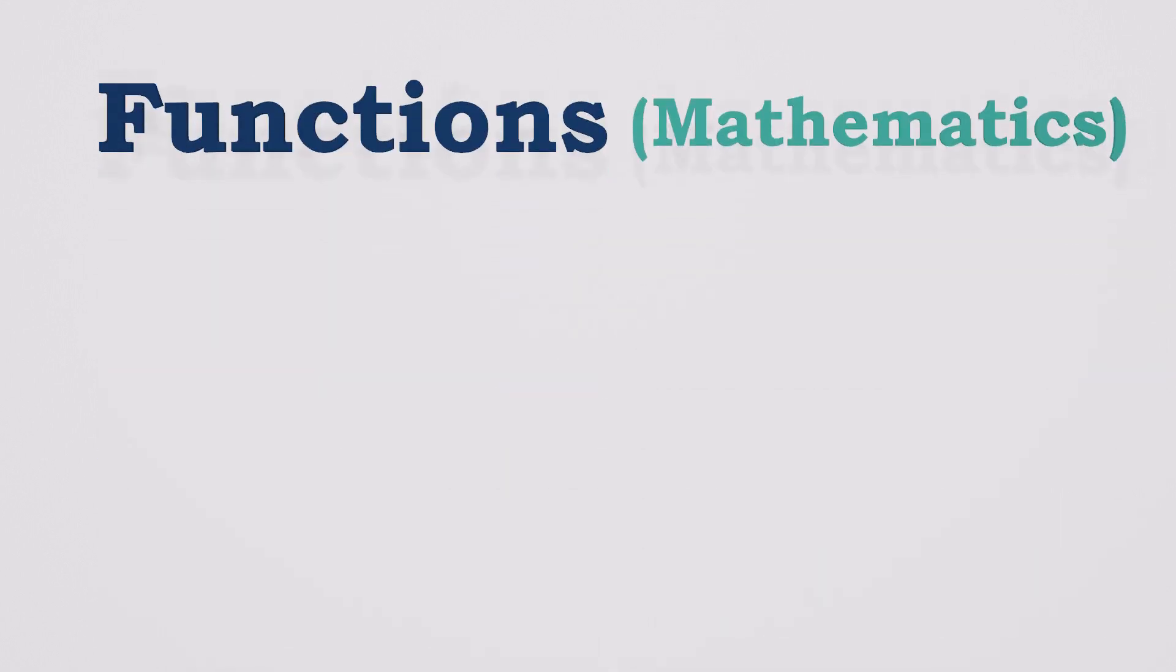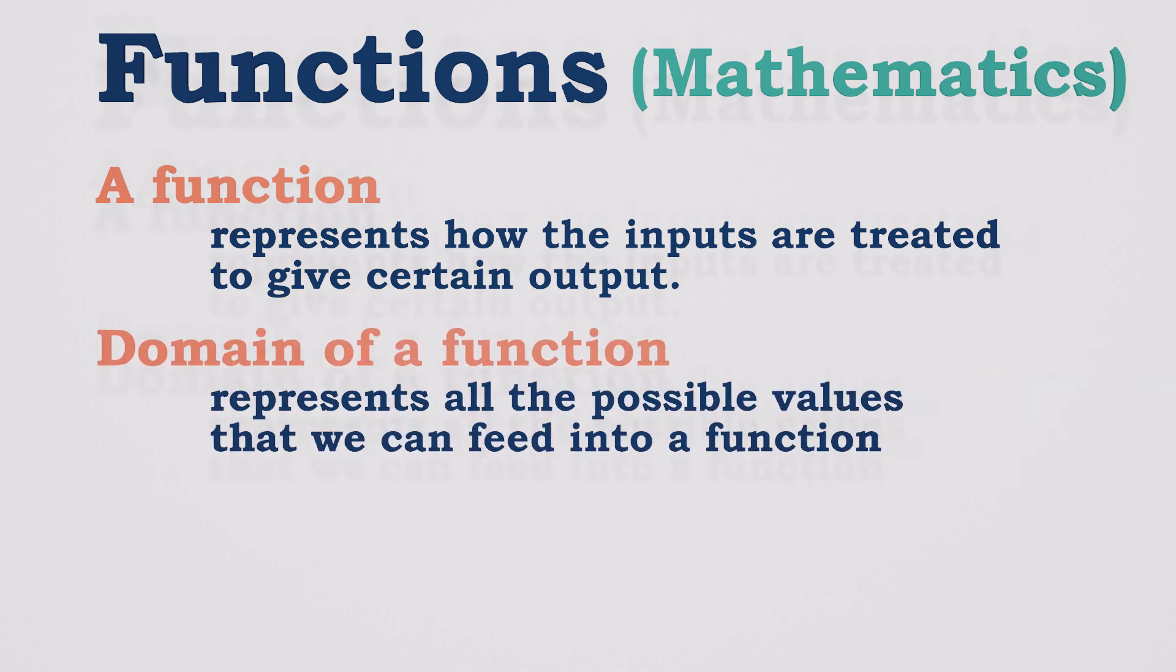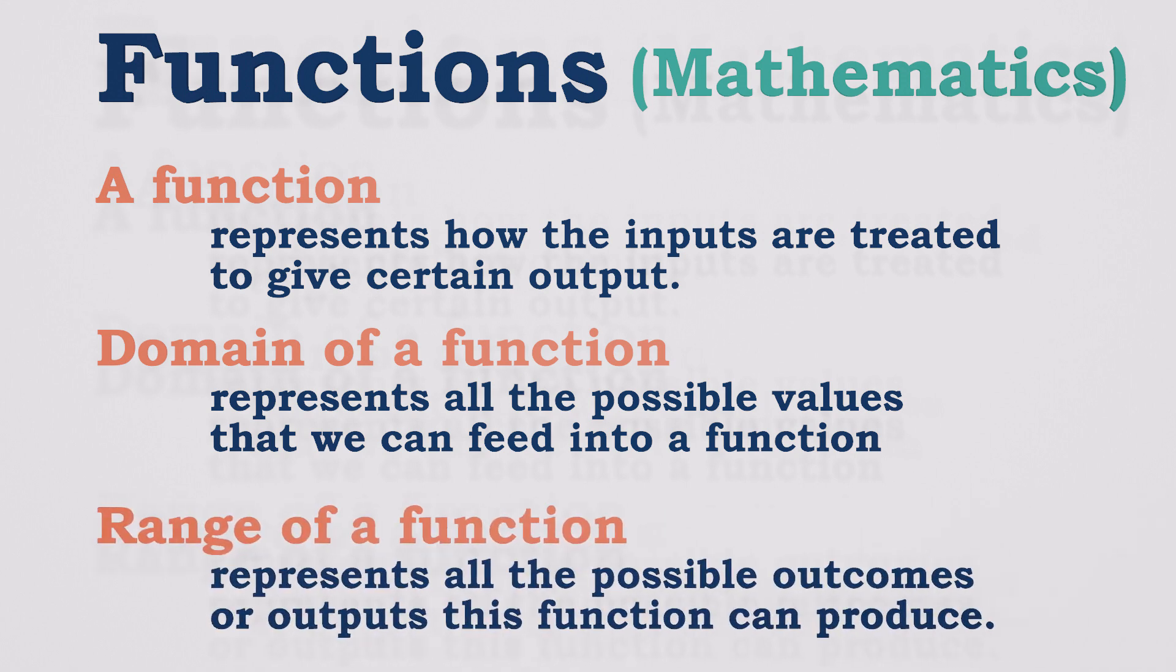So, in summary, a function represents how the inputs are treated to give certain output. The domain of a function represents all the possible values that we can feed into a function. The range of a function represents all the possible outputs that a function can produce.